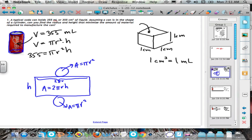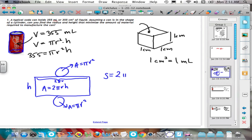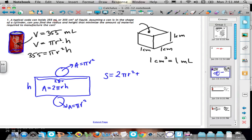So now what we can do is write an expression for the surface area. Let's use S for surface area. So we have two circles, that's 2 times pi r squared, and then this rectangle, which is 2 pi r h.